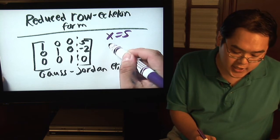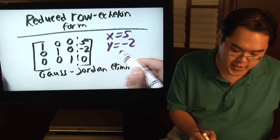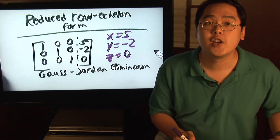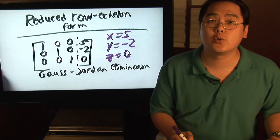You know what the answers are for each particular variable. In this case, x is 5, y is negative 2, and z equals 0.